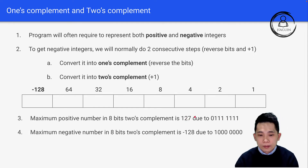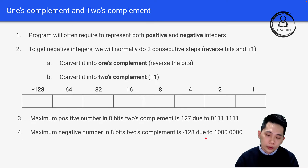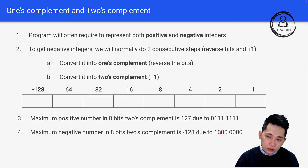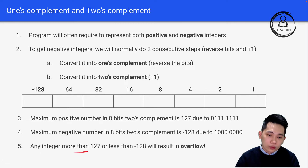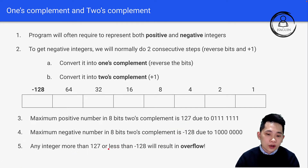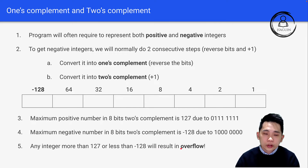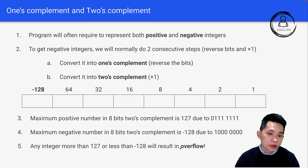For the minimum negative number in 8-bit two's complement form, it will be negative 128. What we do here is set the 8th bit to one and have zero for the remaining bits. Therefore, in two's complement form, any integer greater than 127 or less than negative 128 will result in overflow. Later on, we'll do some examples to show how overflow takes place.